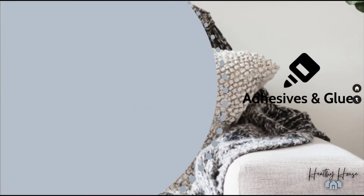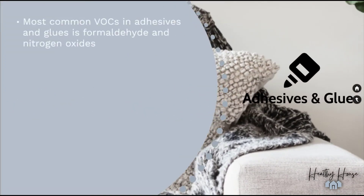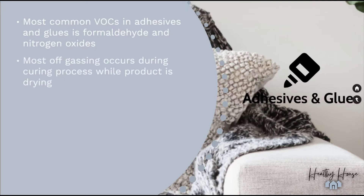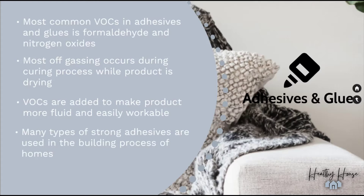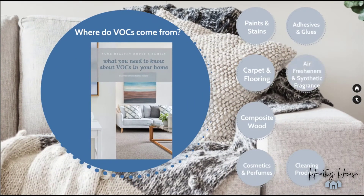Adhesives and glues are another big source of VOCs in our homes — anything from craft glue to industrial adhesives usually contains VOCs. The most common VOCs in adhesives and glues are formaldehyde and nitrogen oxides, which generally off-gas the most during the curing process while the product is drying. VOCs help the product be more easily workable and fluid. In the building process of our homes, many of these strong adhesives are used in a variety of applications, so we're being exposed all the time.